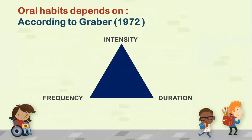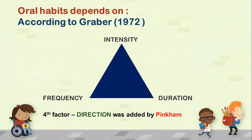Oral habits depend on three important factors given by Graeber in the year 1972: intensity, frequency, and duration. A fourth factor, direction, was added by Pinkham. Intensity is the amount of force applied to the teeth while performing the habit. Duration is the amount of time spent performing the habit. Frequency is the number of times the habit is practiced throughout the day. Direction refers to in which direction the habit is being performed. These are the four important factors influencing oral habits.